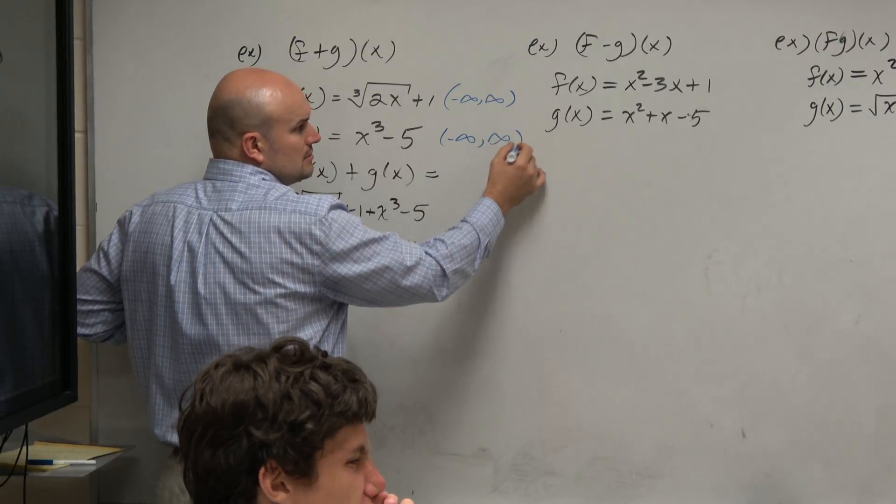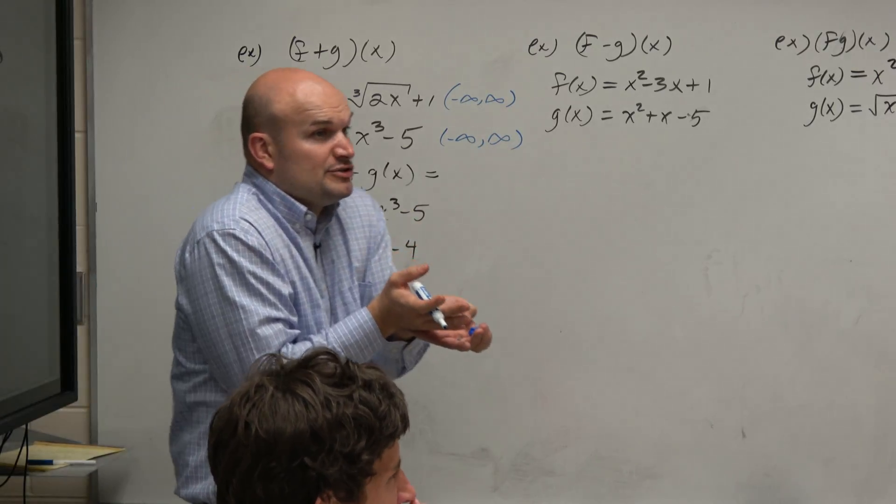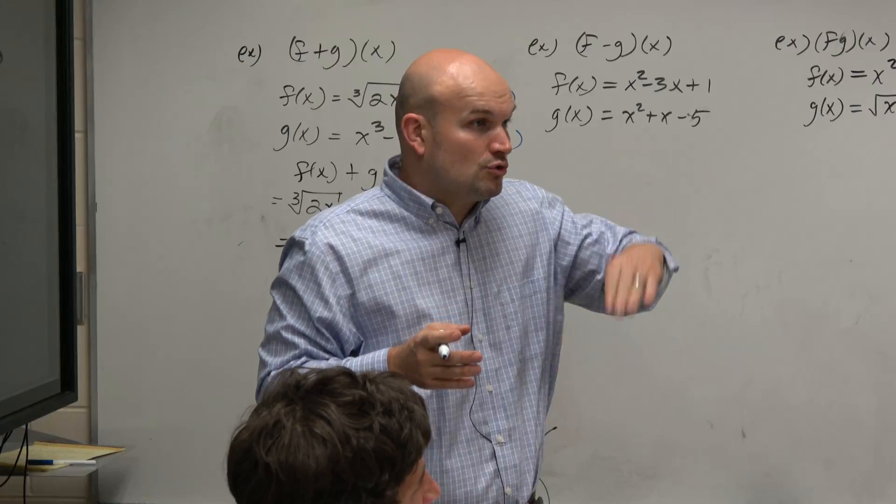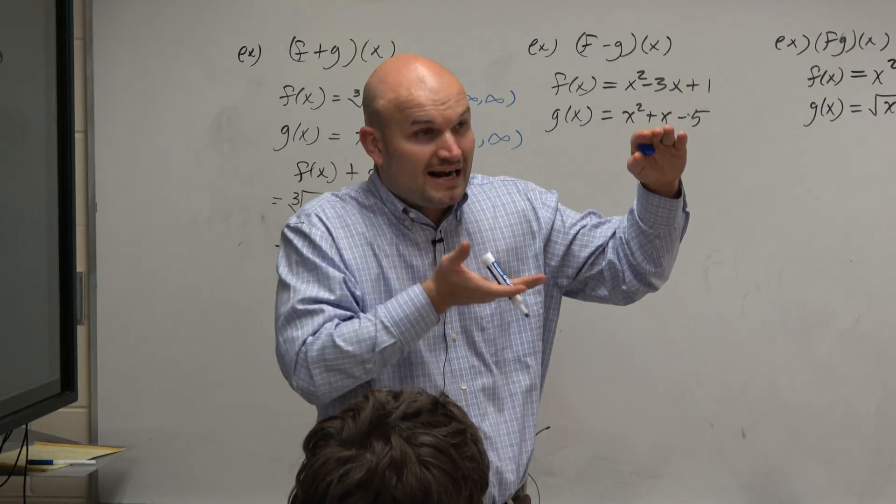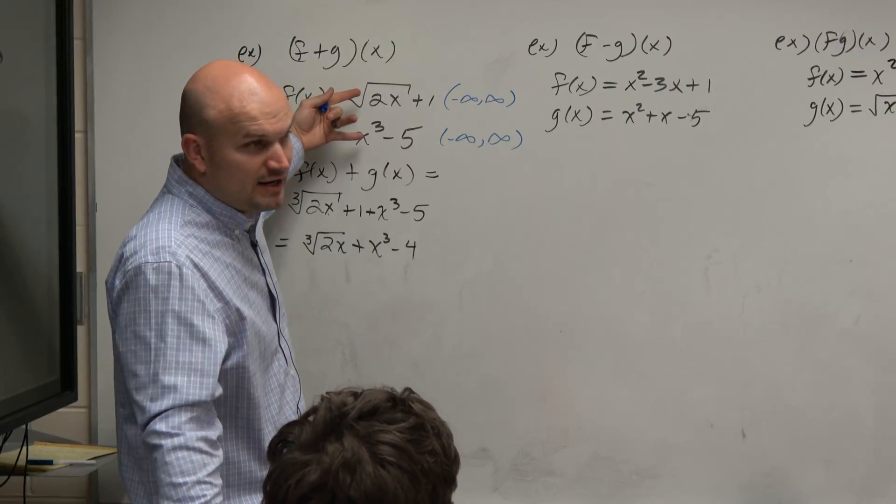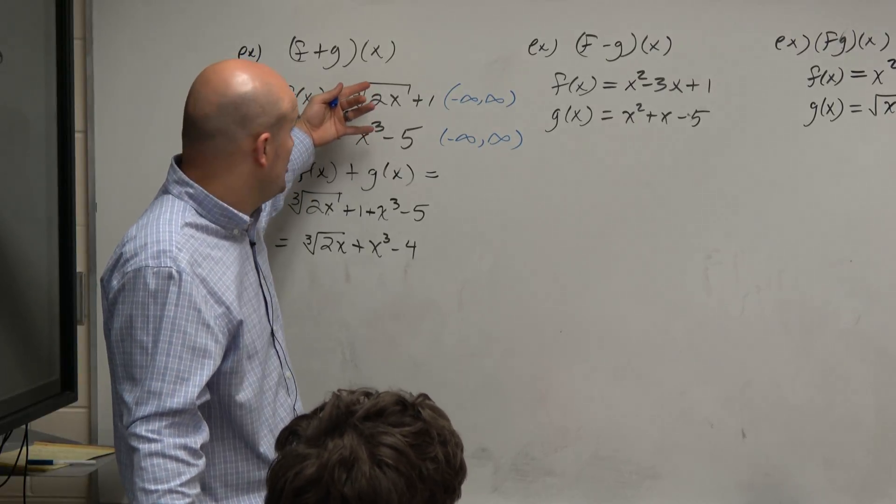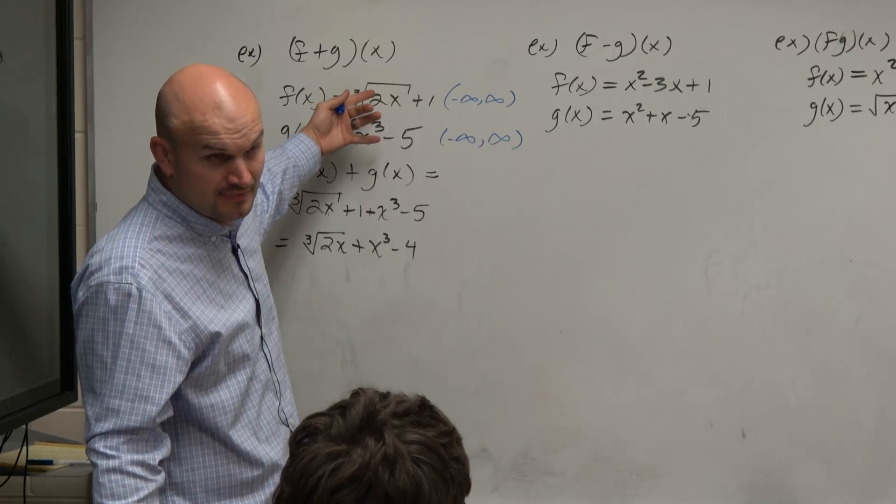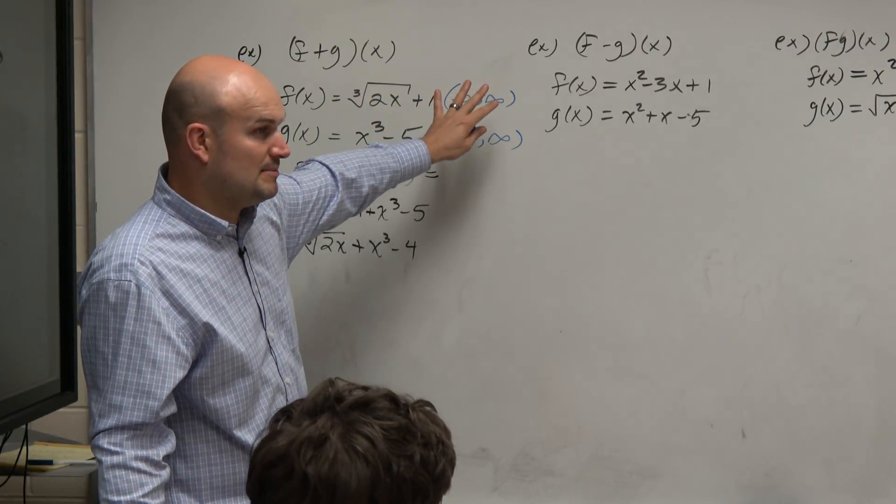So again, what are the only restrictions we took a look at? Square root of a negative number, dividing by 0. You guys agree that these two functions are not the square root of a negative number, or they're not going to involve taking the square root of a negative number or dividing by 0. Correct? So that's why the domain here is all real numbers.